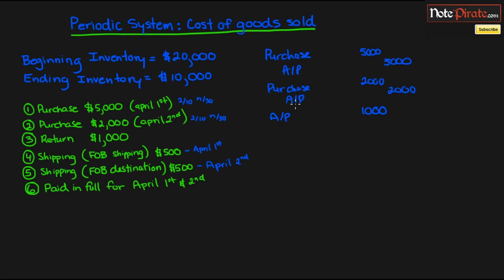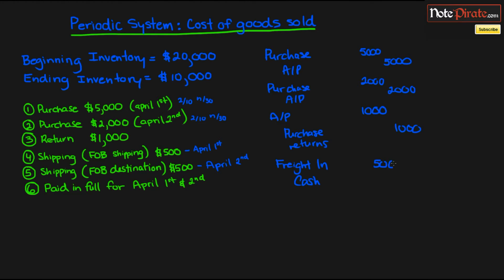Instead of using purchases as our credit, we're going to be using the purchase returns and allowances contra account for $1,000. And the shipping, which is FOB Shipping Point — if we are the purchaser, we pay the $500 of shipping. That is going to be an account called Freight In, which is another expense account that adds to the cost of our inventory, and we're going to use cash for shipping costs, which will be $500.